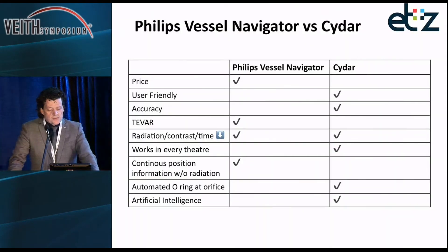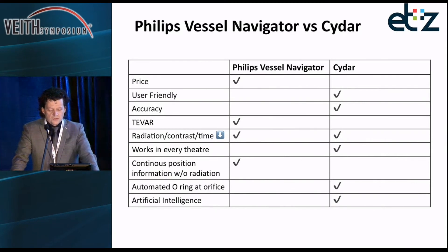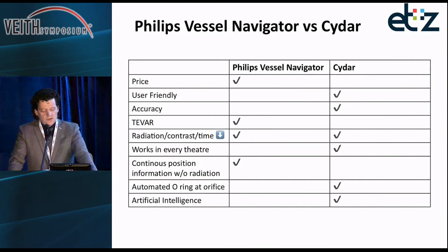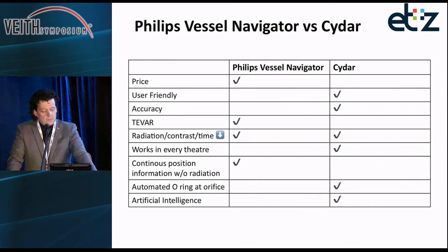Comparing the two systems: the price of Philips is lower compared to CIDR. I think the CIDR system is more user-friendly and more accurate. At this moment, Philips supports the TIVAR system and CIDR does not, but that will change in the near future. Both systems reduce radiation, contrast, and OR time. CIDR works in every theater, while Philips only works in their own theater. A pro of Philips is that you have a continuous position of information without radiation — you do not need radiation to see where the overlay is when you move the C-arm. CIDR features an automated O-ring at the orifice and is supported by artificial intelligence.